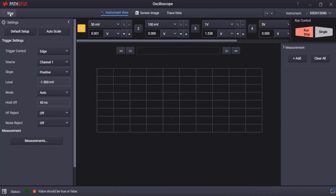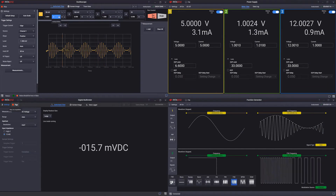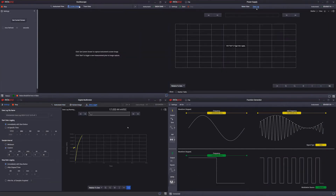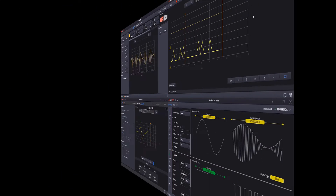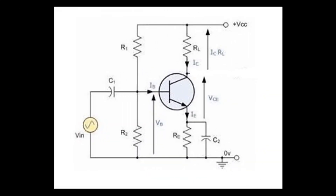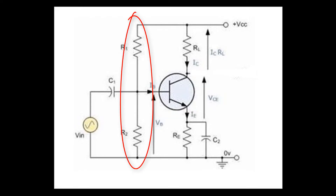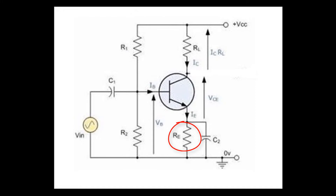In this video, I am going to show you how to use the PathWave Benchfield software to remotely control all the instruments when you do not have access to the hardware. Let's begin with the device under test, which is built up with a transistor circuit. The circuit consists of an NPN transistor, an input coupling capacitor, a biasing network of R1, R2, and emitter resistor RE, bypass capacitor C2, and a load resistor RL.